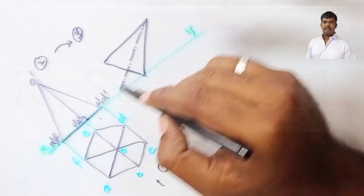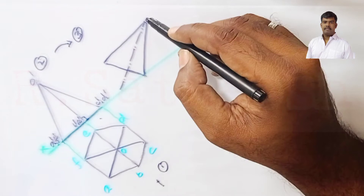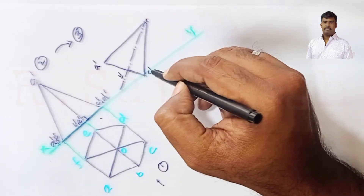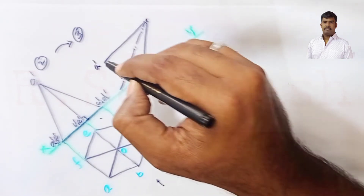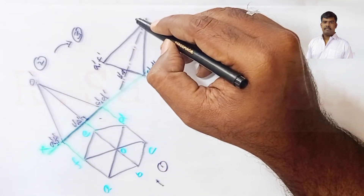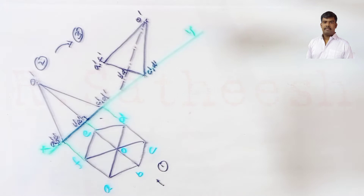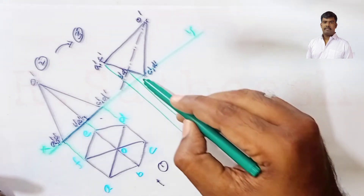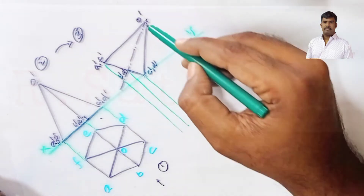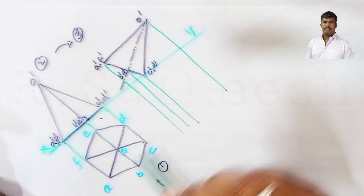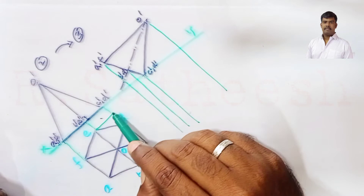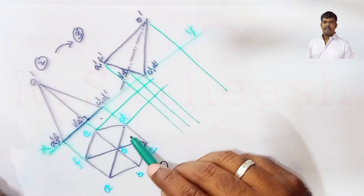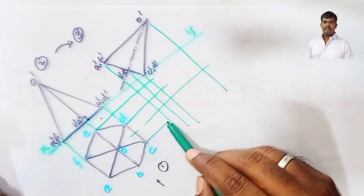The only difference is that in diagram one the axis is perpendicular to HP, while here the axis is inclined 30 degrees to HP. Assign the letters A', B', C', D', E', F' and apex O'. Then draw projection lines from A, F, B, E, C, D and apex O, as well as from diagram number one from F, D, apex O, A, and C and B.